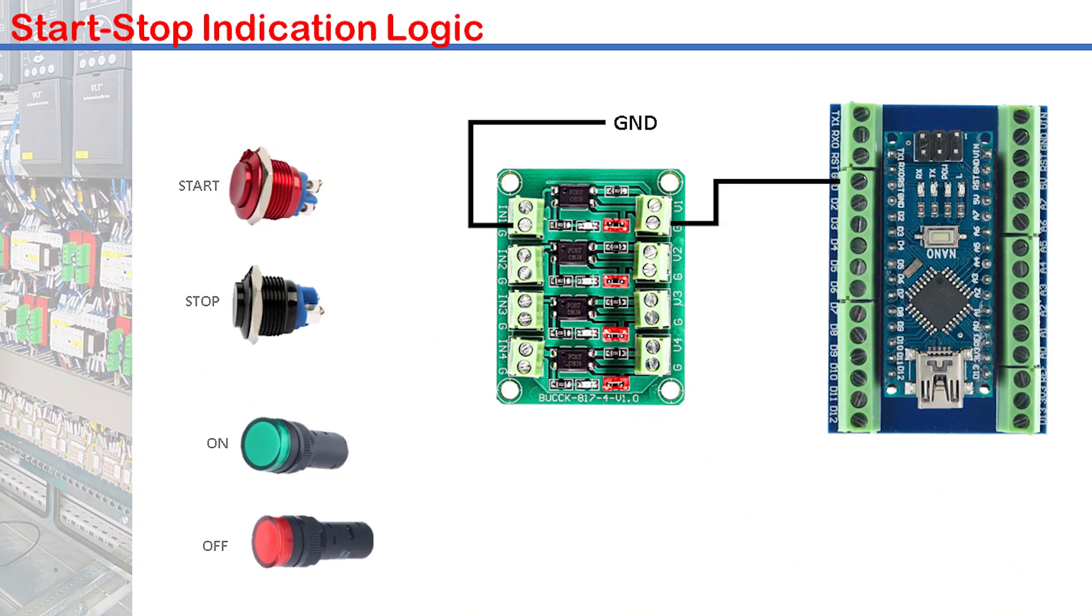One terminal of each switch connects to the positive of the 24V power supply. Then the other terminals of the red and black switches to IN1 and IN2 of the module respectively. V1 and V2 of the module then connect to D2 and D3 of the Nano.